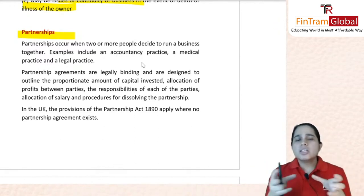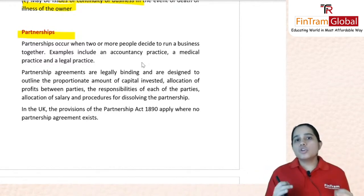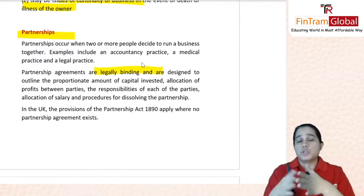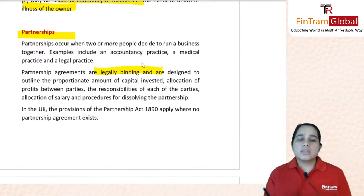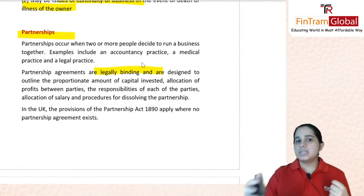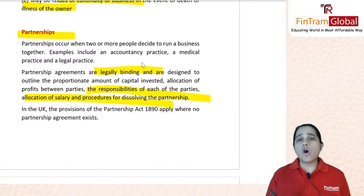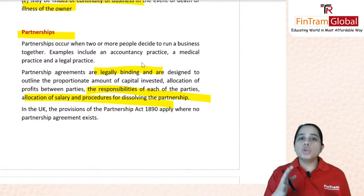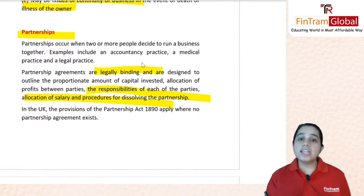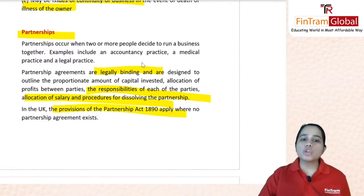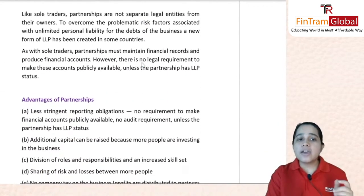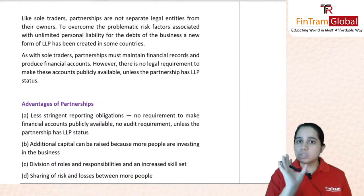Moving on to partnerships. Partnership agreements are legally binding and usually mention: how much capital each partner contributes, the profit sharing ratio, roles and responsibilities of each partner, salaries, and what procedures apply if the partnership is dissolved. In the UK, if you have no partnership agreement, the provisions of the Partnership Act of 1890 automatically apply. If you do have an agreement, the provisions within it will govern the partnership.